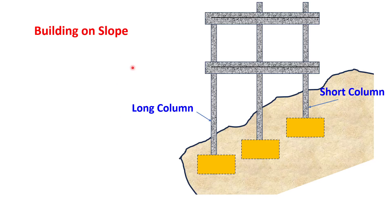Now let us see what causes the occurrence of a short column. One example is a building on a slope. A frame on a sloped site, with all columns of identical section depth, shows that on the downhill side the columns are taller, while on the uphill side the columns are shorter. Relatively, the upgradient column is a short column. Thus, a short column condition can arise in structures with sloped foundations.